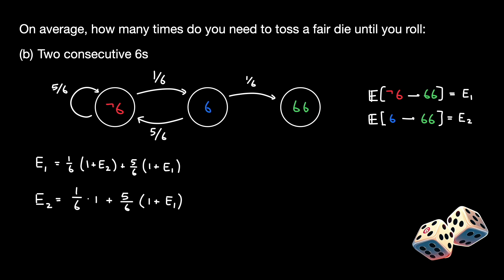Now that we have both of these expressions, we can try to solve them simultaneously to obtain an answer. Let's start by simplifying them. The first equation simplifies to E1 is equal to E2 plus 6, and the second equation simplifies to E2 is equal to 1 plus 5/6 E1. We can now plug the second equation into the first equation to solve for the expected number of tosses to get two consecutive sixes. This results in 42.